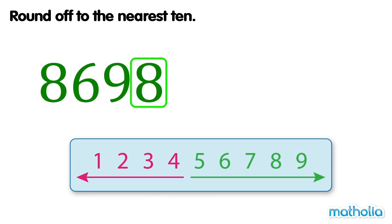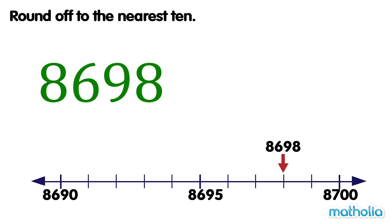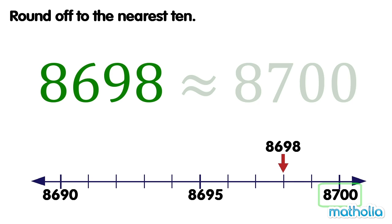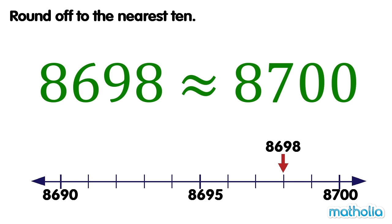Digits that are five or more are rounded up. So, eight thousand six hundred and ninety-eight is rounded up to eight thousand seven hundred. To the nearest ten, eight thousand six hundred and ninety-eight is approximately equal to eight thousand seven hundred.